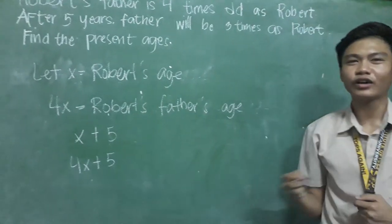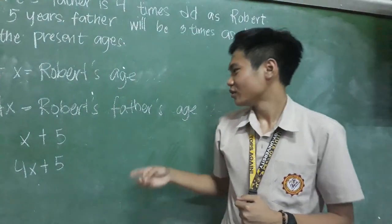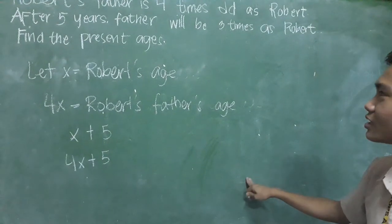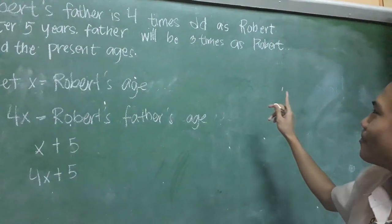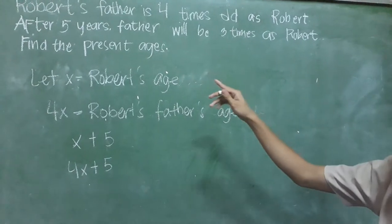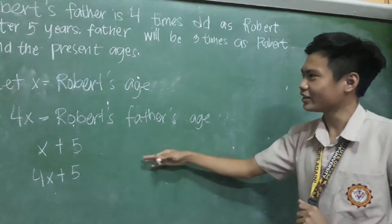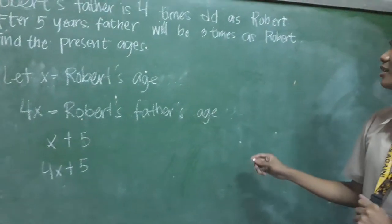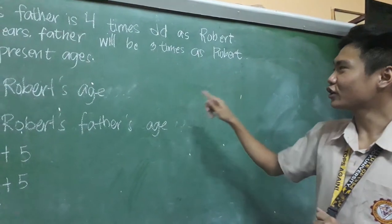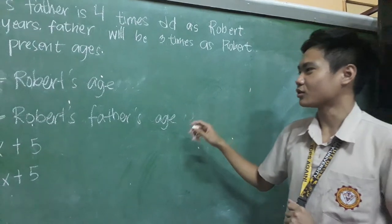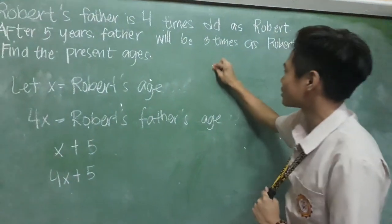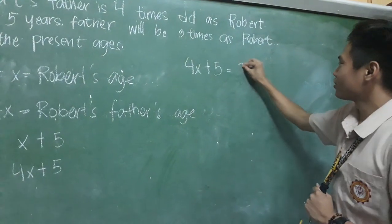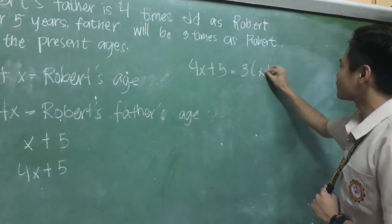So now we have all that we need to solve this problem. It is stated that in five years, father will be three times as Robert. So we can write this equation as 4X plus 5 equals 3 times X plus 5.